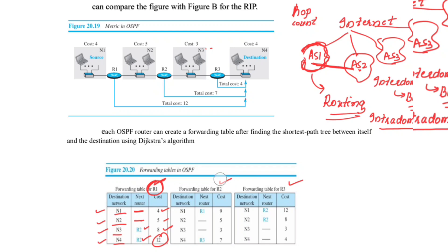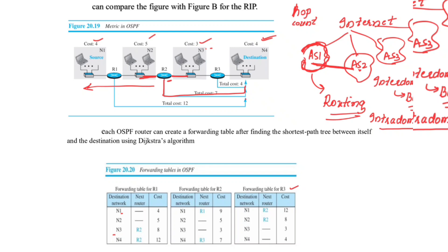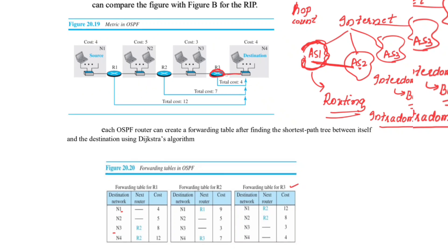For R2's forwarding table: R2 is directly connected to N2 and N3 (next router = dash). To reach N1, cost is 5 + 4 = 9. To reach N4, cost is 3 + 4 = 7. For R3's forwarding table: R3 is directly connected to N3 and N4 (cost 3 and 4 respectively, next router = dash).